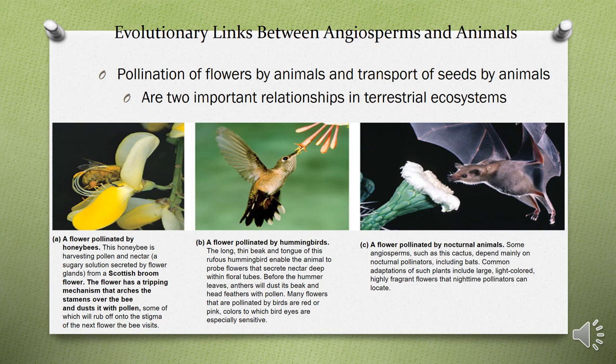This slide shows the evolutionary link between angiosperms and animals, with images showing pollination by different agents: a flower pollinated by honeybees, a flower pollinated by hummingbirds, and a flower pollinated by nocturnal animals like bats. This concludes today's lecture covering types of fruits, their examples, the evolutionary link between plants and animals, cross-pollination, and factors that facilitate it.